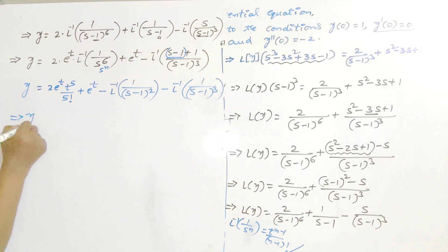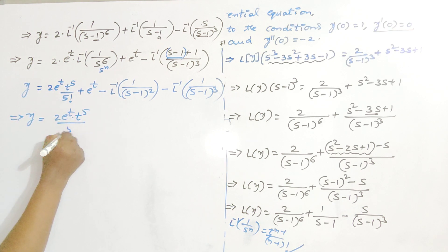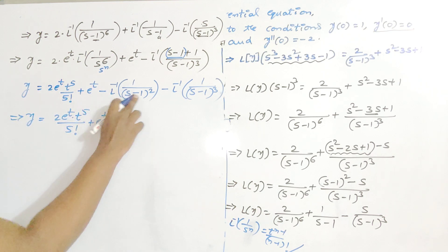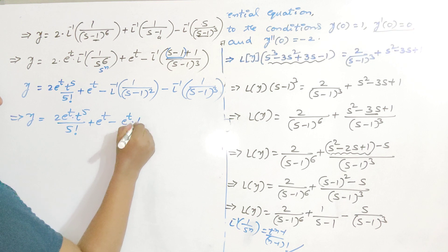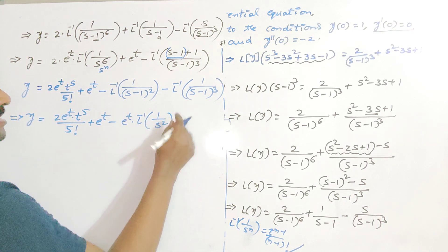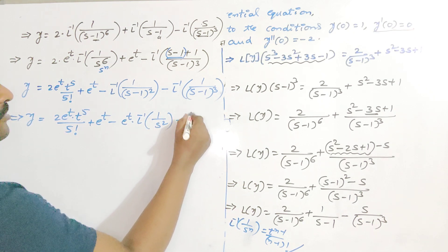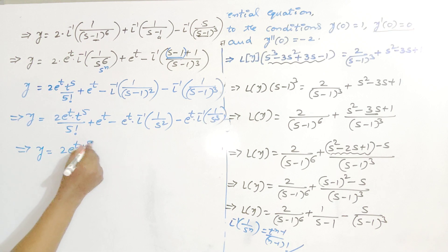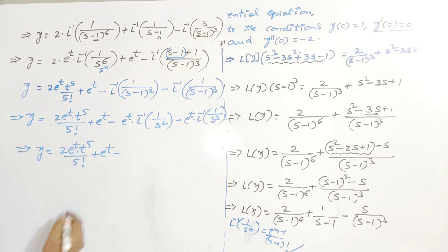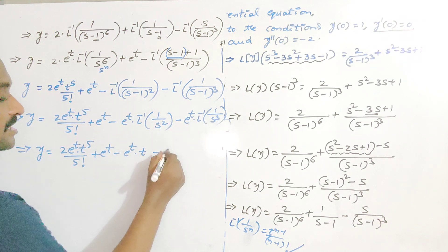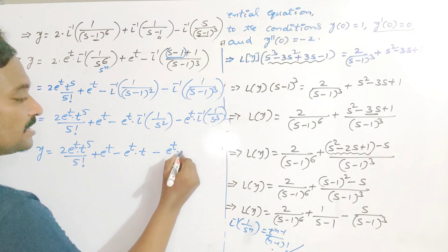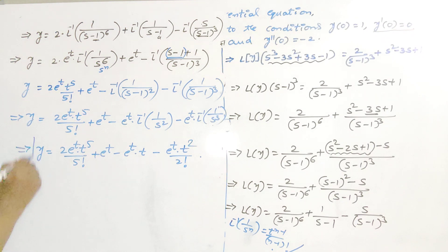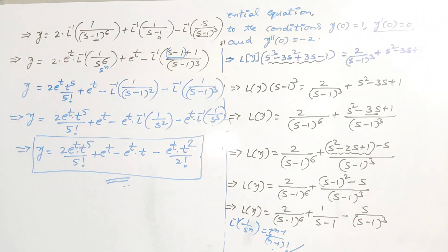Therefore, y = 2 × e^t × t⁵/5! + e^t minus e^t × t minus e^t × t²/2!. Using L⁻¹{1/S^n} = t^(n-1)/(n-1)!, L⁻¹{1/S²} = t and L⁻¹{1/S³} = t²/2!. This is the required solution of the given differential equation at the given initial conditions. In the next video, I will give more problems on solving ordinary differential equations using Laplace transforms. Thank you very much.